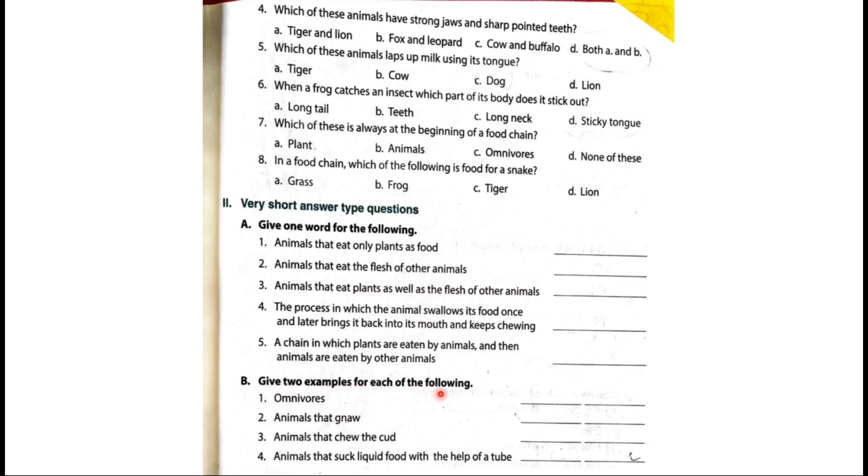Give two examples for each of the following. Omnivores: crow and bear. Animals that gnaw: rabbits and rats. Animals that chew the cud: cows and buffaloes. Animals that suck liquid food with the help of a tube: answer is bees and butterflies.